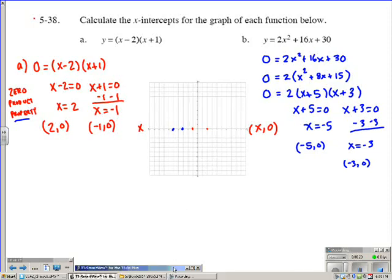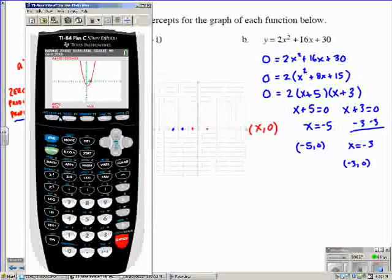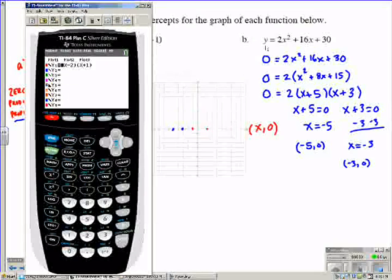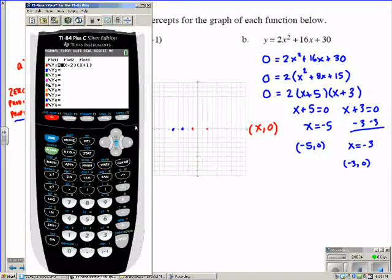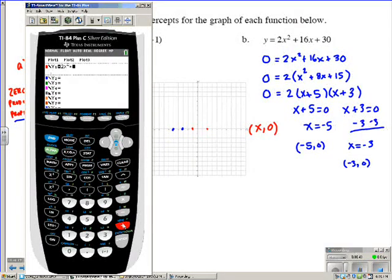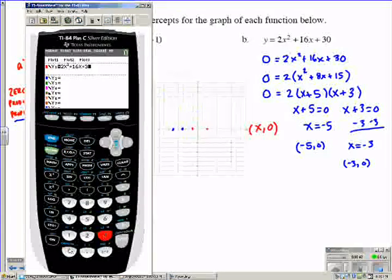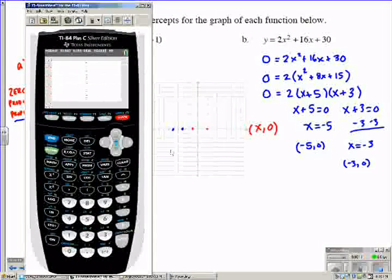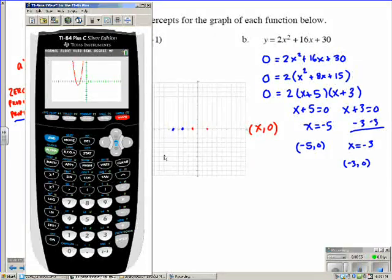Now to check it, again, remember you can go on to your calculator here. And you can type it in. I would type in the original one here, just in case you made a mistake in your factoring. Let's go in here. Let's do 2x squared plus 16x plus 30. Let's hit graph. You'll see this is where it looks like our function is here. You could do the same thing we did last time, or you could check it here another way. I'll show you another method. If I already know that I think it's at negative 5, 0, and negative 3, 0, I can do trace.